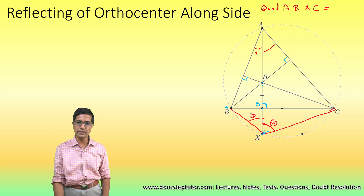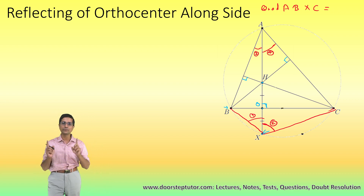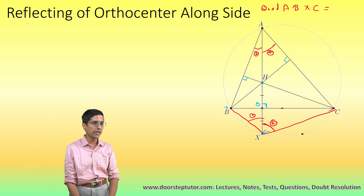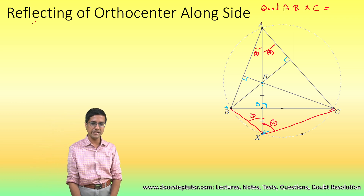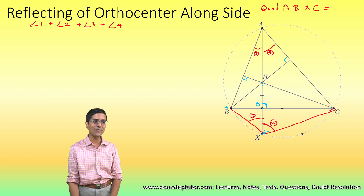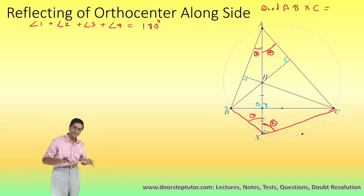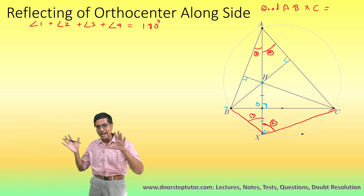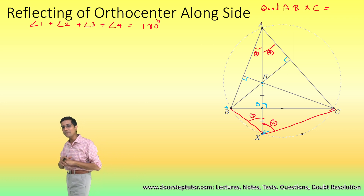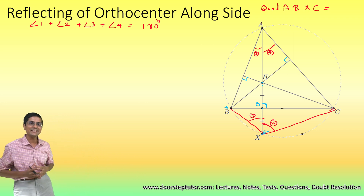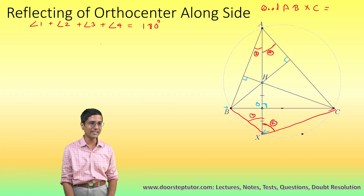The property of a cyclic quadrilateral is that the sum of opposite angles equals 180 degrees. So angles 1 plus 2 plus 3 plus 4 should equal 180 degrees. If those sum to 180 degrees, this is a cyclic quadrilateral, and consequently A, B, C, and X all lie on the same circumcircle. That is the idea behind this proof.